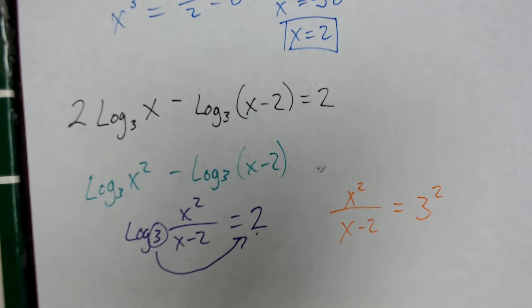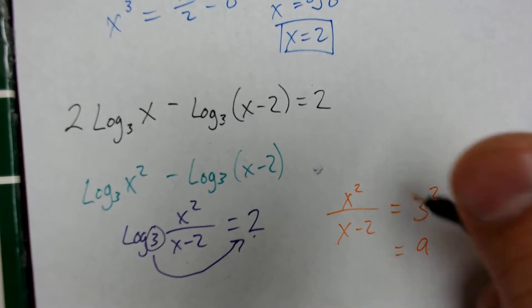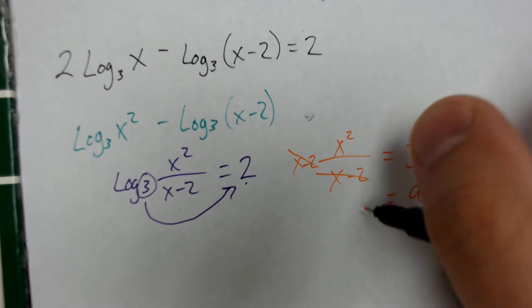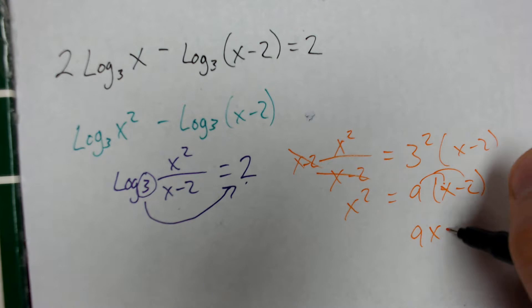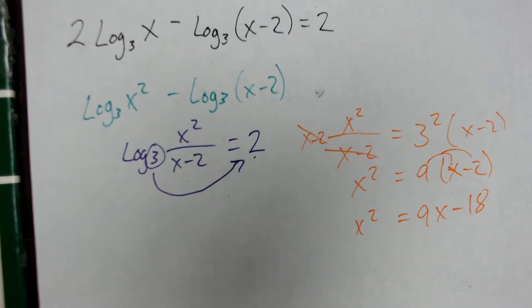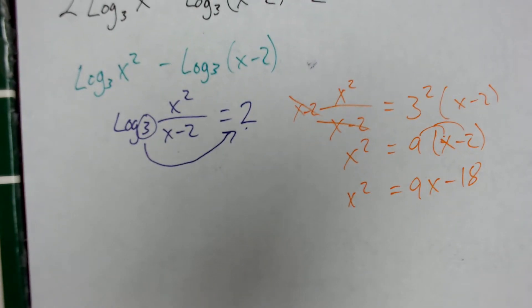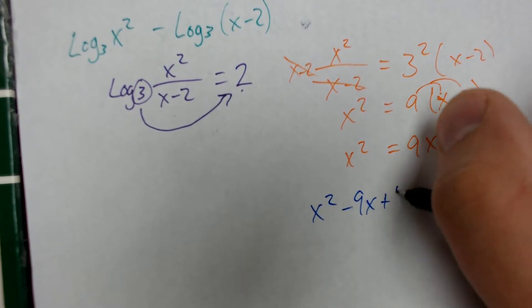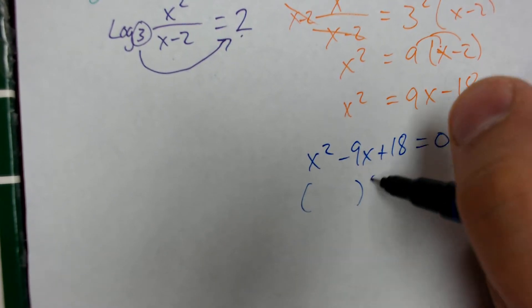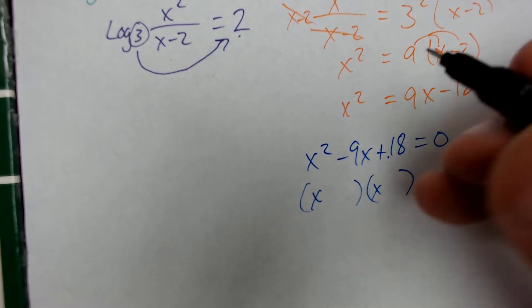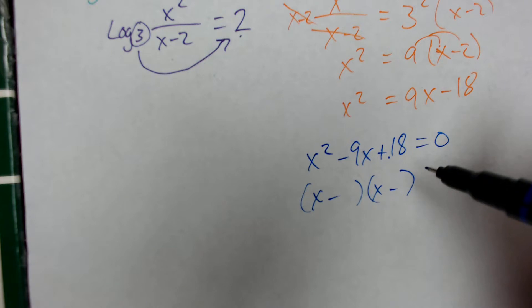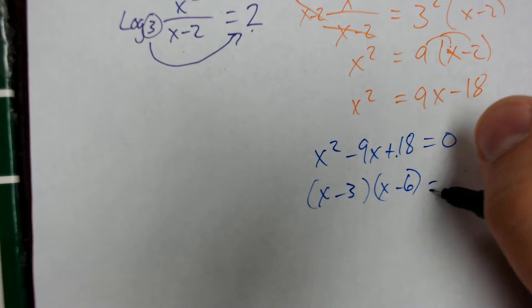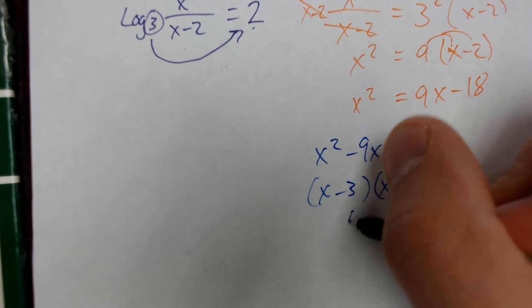3 squared gives us 9. Multiplying each side by (x minus 2) cancels it on the left side, giving us x squared equals 9(x minus 2), which expands to 9x minus 18 equals x squared. Now we have a quadratic. Using the zero factor theorem, we rewrite as x squared minus 9x plus 18 equals zero, which factors as (x minus 6)(x minus 3) equals zero. Our possible answers are x equals 3 or x equals 6.